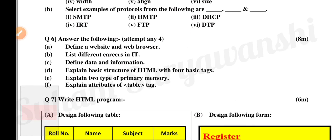Next question number 6, tumha la cyaar answers liha hai, cyaar questions at a time karai seya hai. Yaati saha questions lila hai, eight marka sati, cyaar questions, pratyek question ha doun marka sati asana ra hai. Define a website and web browser — doun marka sati. List different careers in IT — doun marka sati, minimum doun careers define karayla. Define data and information — data define karayla ek marka, information define karayla ek marka. Explain basic structure of HTML with four basic tags — cyaar basic tags, doun marka, pratyek tagla ardha marka. Explain two types of primary memory. Explain attributes of table tag — chaar tari attributes explain karayla.